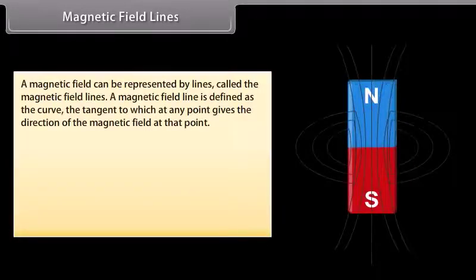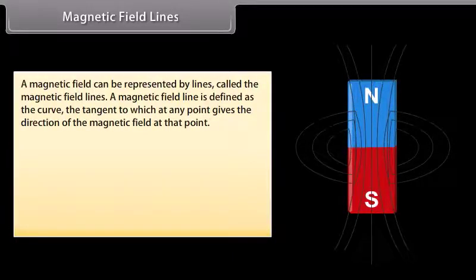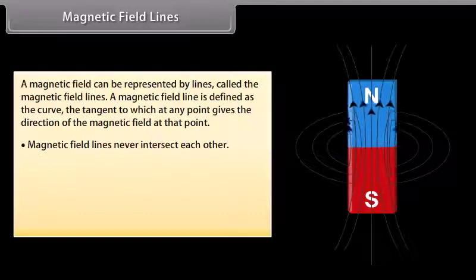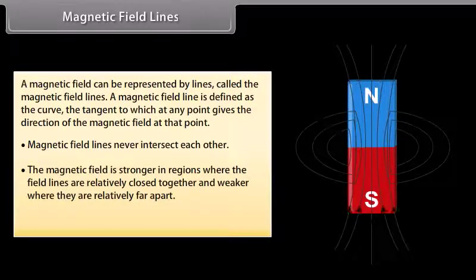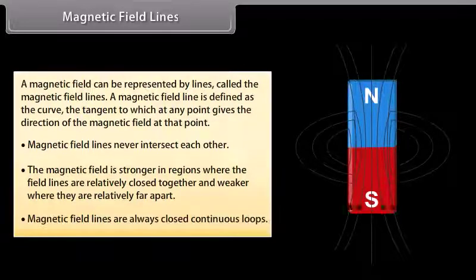A magnetic field can be represented by lines called magnetic field lines. A magnetic field line is defined as the curve, the tangent to which at any point gives the direction of the magnetic field at that point. Magnetic field lines never intersect each other. The magnetic field is stronger where field lines are relatively close together and weaker where they are far apart. Magnetic field lines are always closed continuous loops.